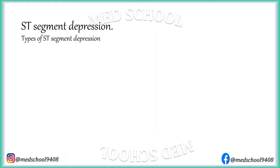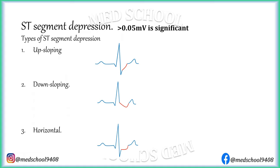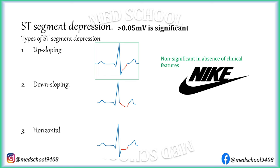ST depression is of three types: up-sloping, down-sloping, and horizontal ST depression. ST depression is considered significant when it is more than 0.5 mm (half of one small box). Up-sloping ST depression is commonly present with tachycardia and considered non-significant if not associated with clinical signs of ischemia. You must be aware of the Nike sportswear logo — it looks like up-sloping ST depression. A person jogging with Nike shoes won't have ischemia; similarly, up-sloping ST depression in an ECG doesn't indicate ischemia.